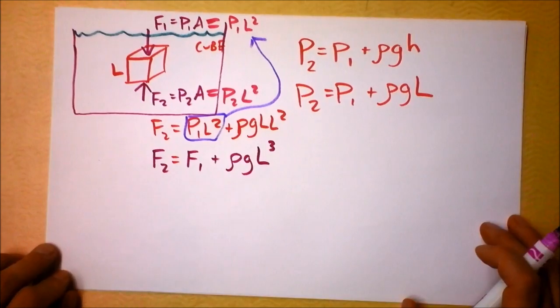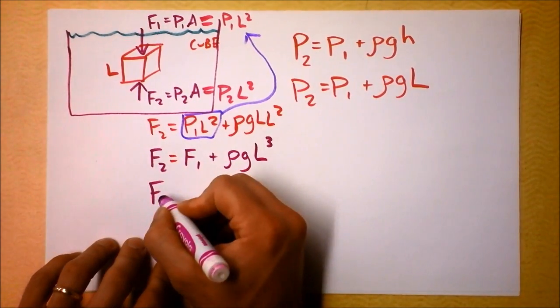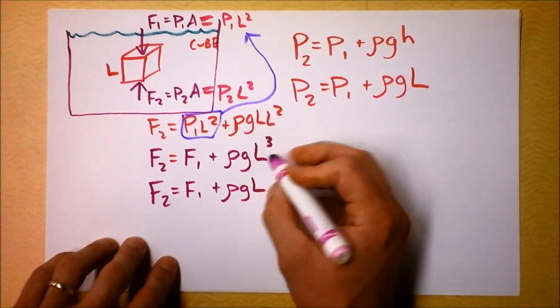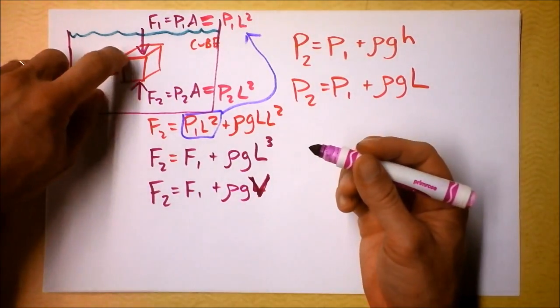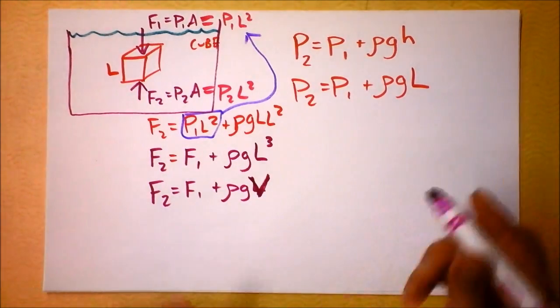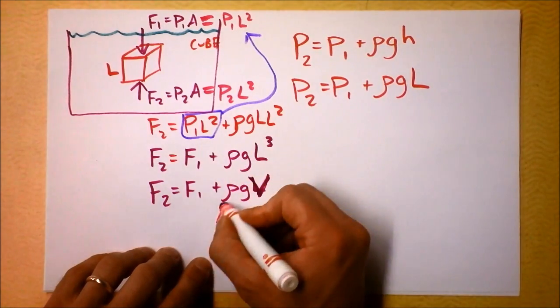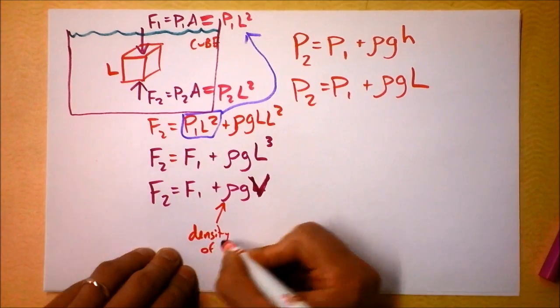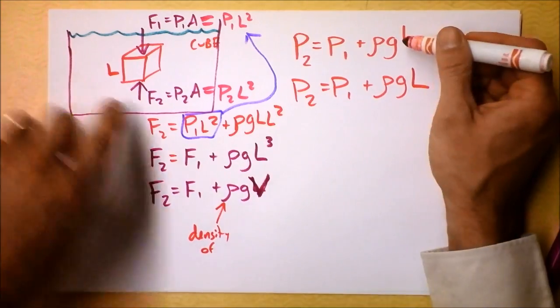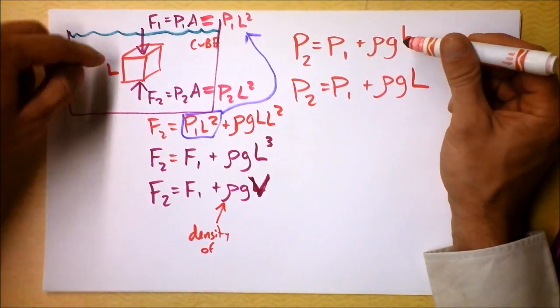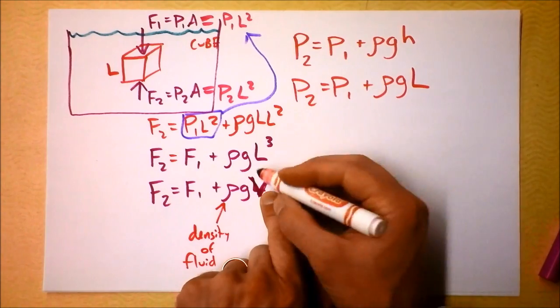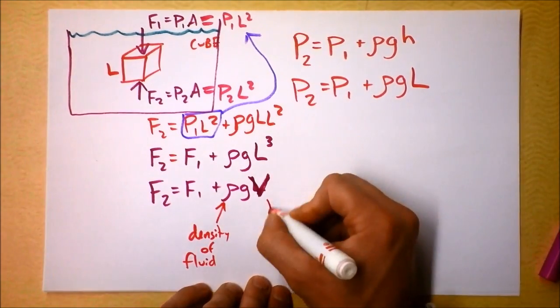So force 2 is force 1 plus rho G how many L's we have here L cubed L cubed. Now L cubed is an interesting thing L cubed is volume. So the force 2 is the force 1 plus rho G L cubed which is the volume of our cube. I guess what I'm saying here let me see if I can figure out what I'm saying here. This density is it the density of my block? Or is it the density of my fluid? Let's see how we originally got rho. This rho was the difference in pressure in the fluid because of varying depths. So it must be the density of the fluid in which we're submerged.